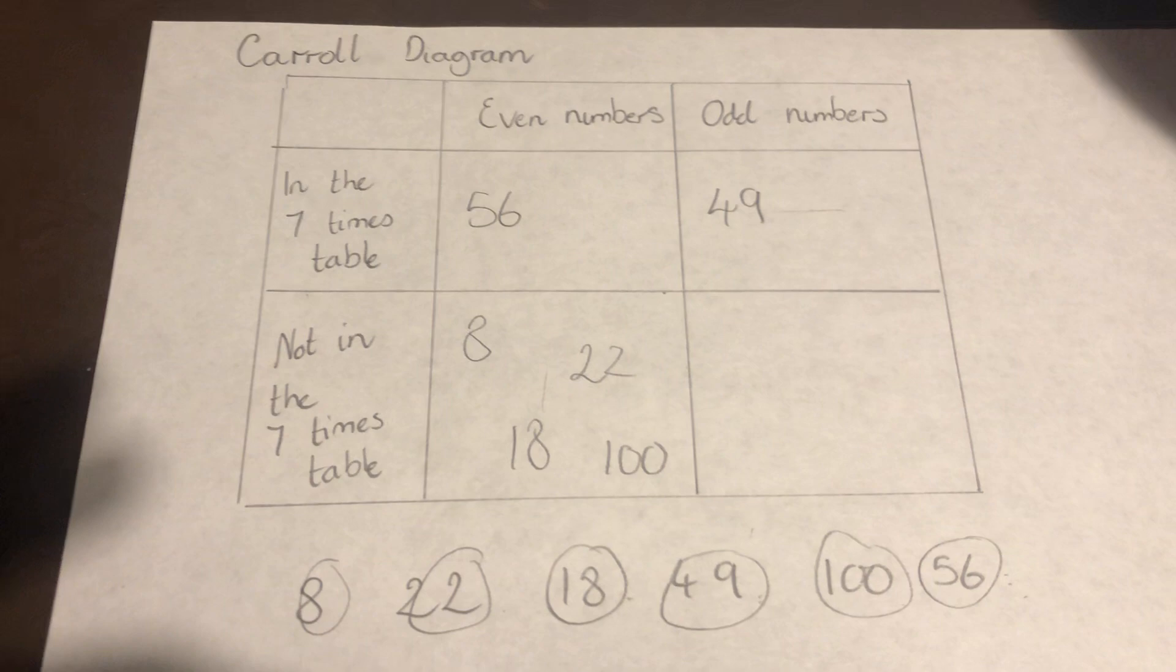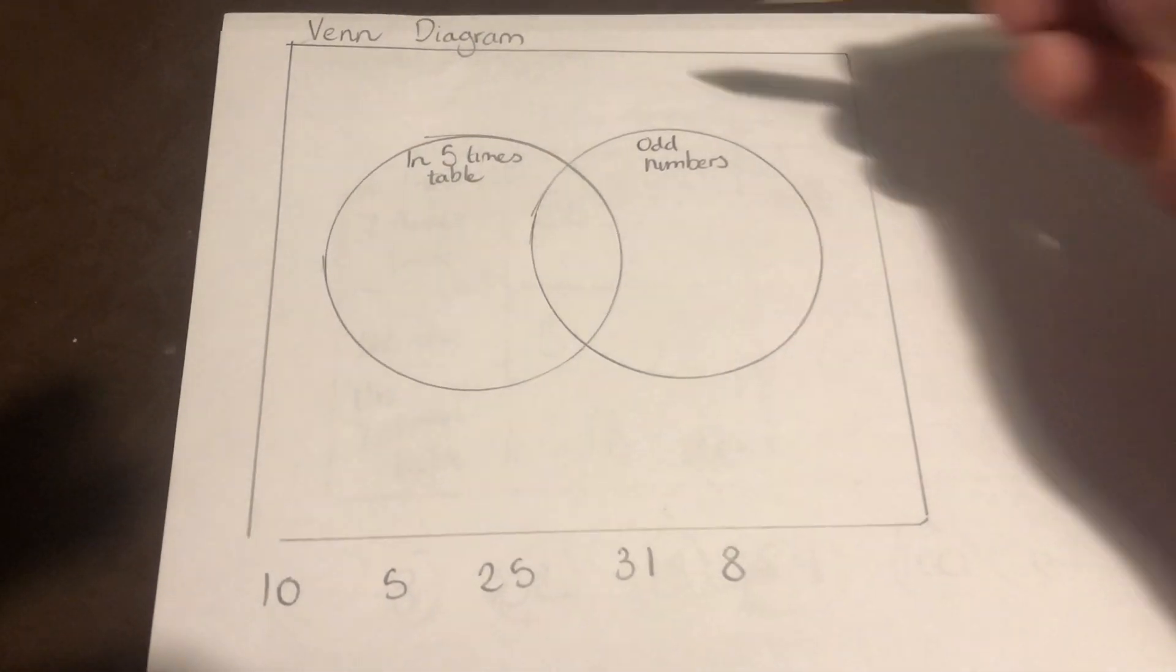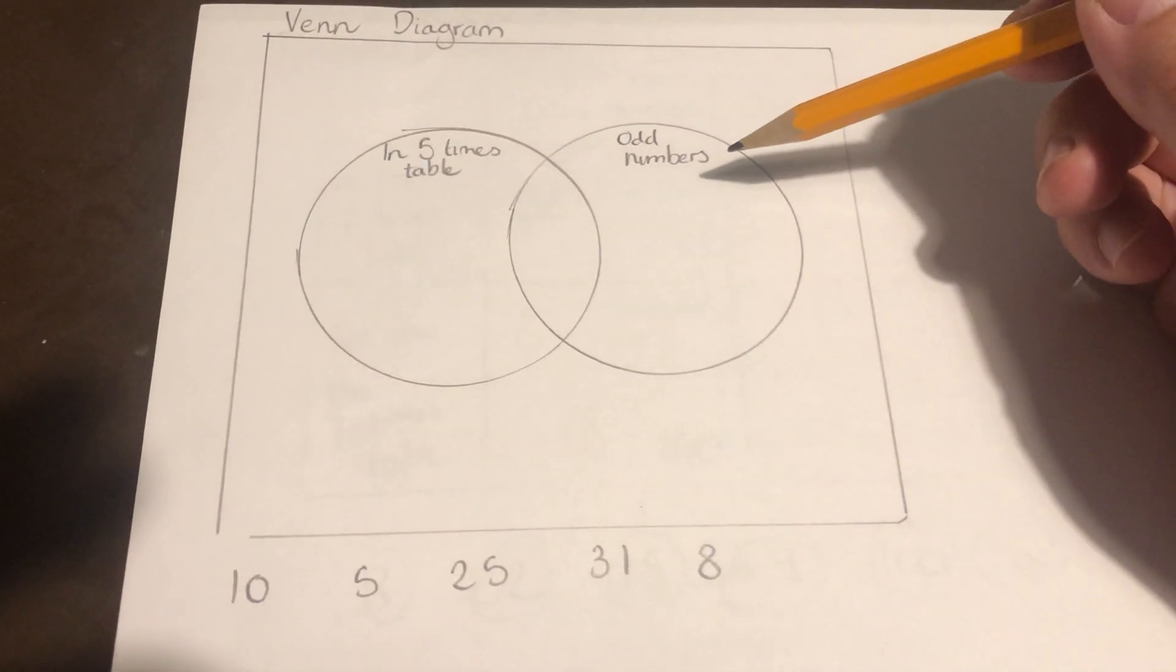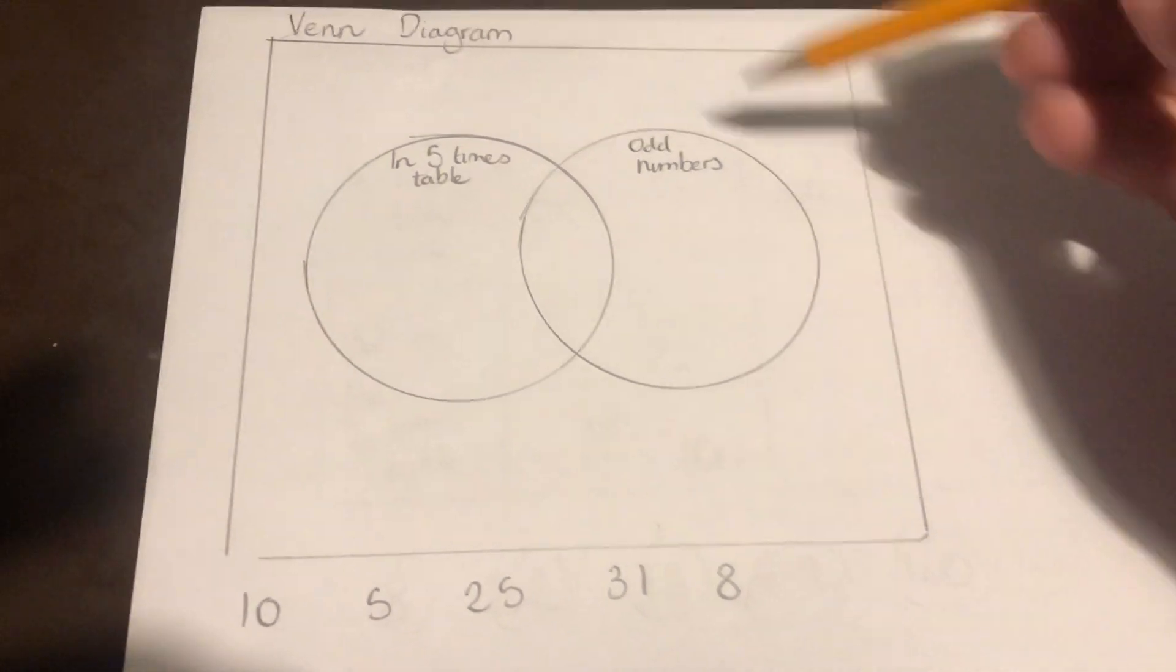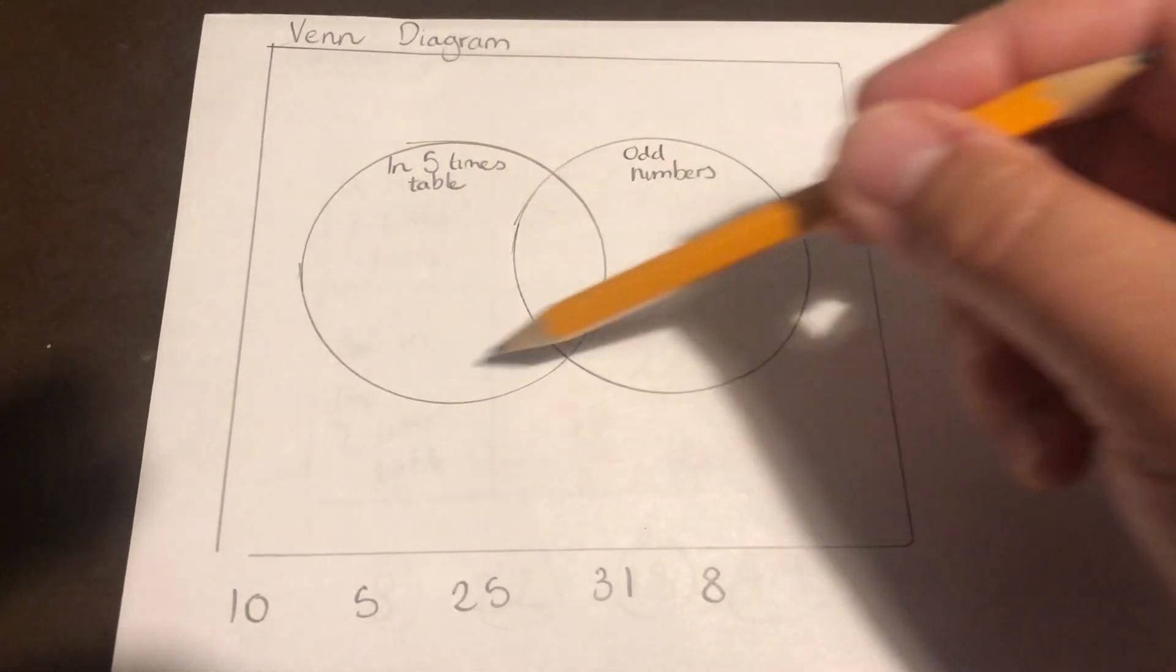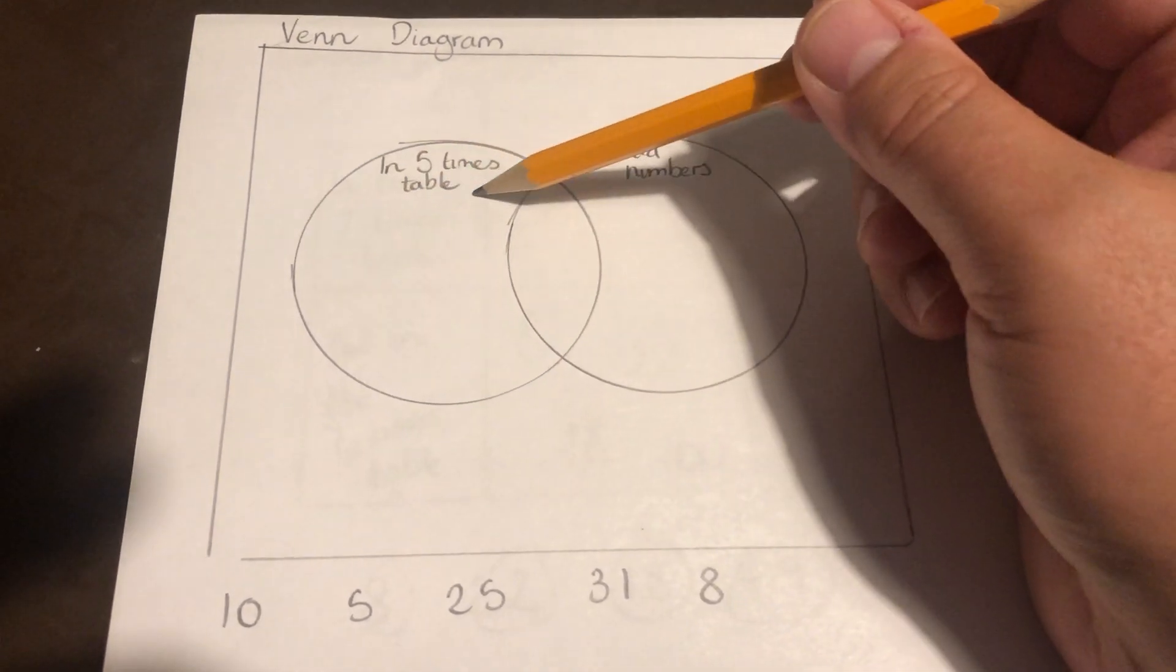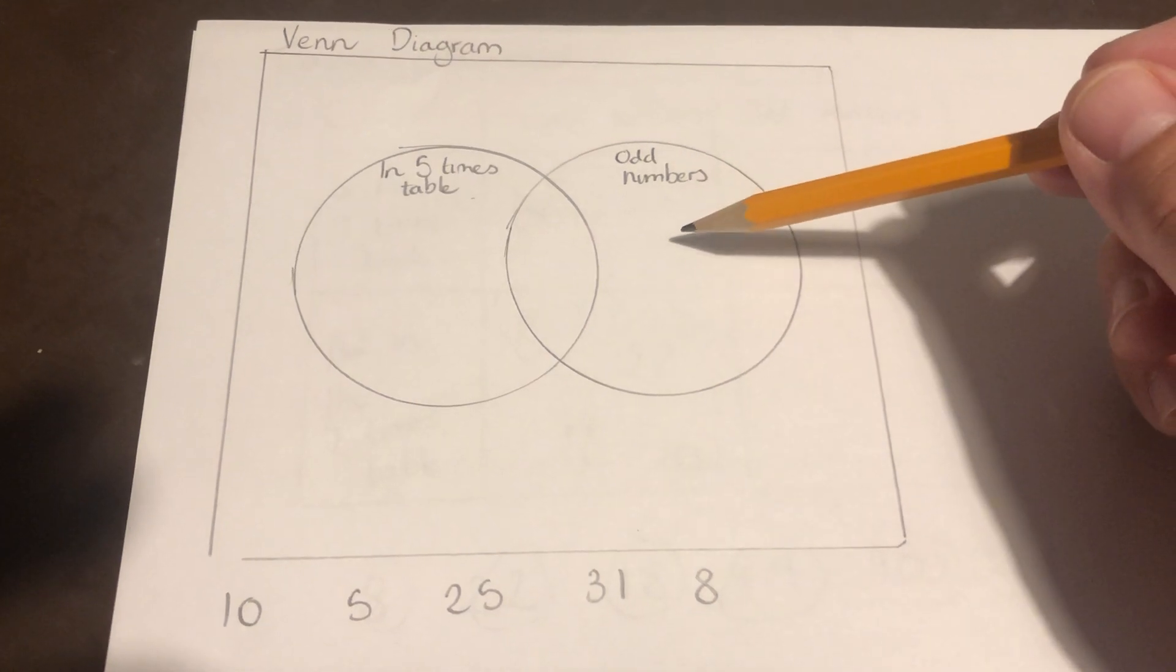The second type of diagram we're going to look at is a Venn diagram. So this is a Venn diagram. You can see that with circles. They're in a box, and the circles tell us that in this circle here, everything inside that circle is in the five times table, and everything inside that circle is an odd number.